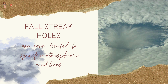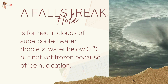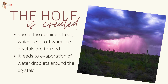Fallstreak holes are rather rare, as they are limited to very specific atmospheric conditions. They form in clouds of super-cooled water droplets, where the water is below 0 degrees Celsius but has not yet frozen because of ice nucleation. When ice crystals do form, a domino effect is set off, causing the water droplets around the crystals to evaporate. This leaves a large, often circular hole in the cloud.